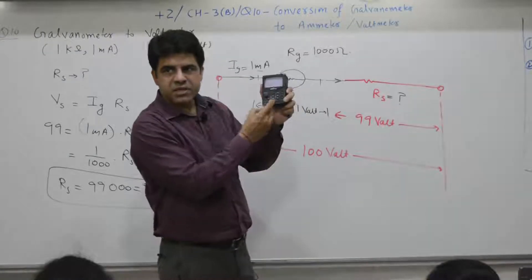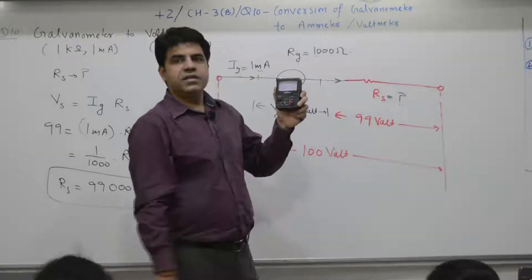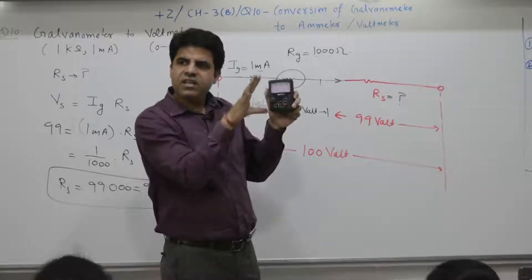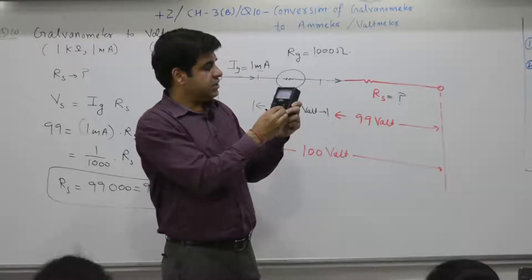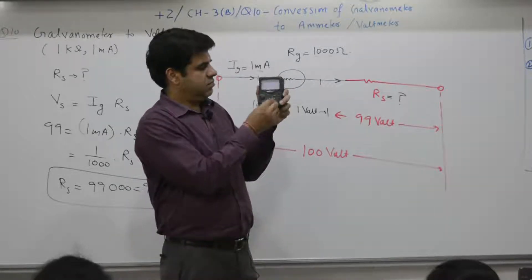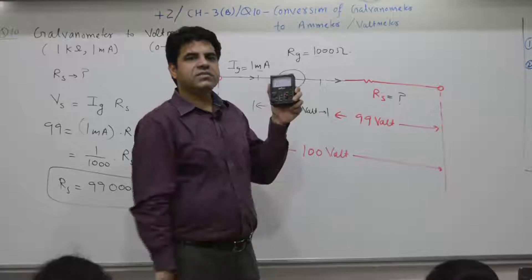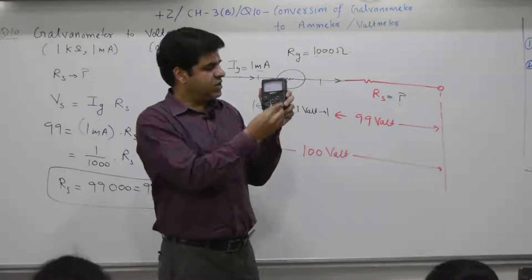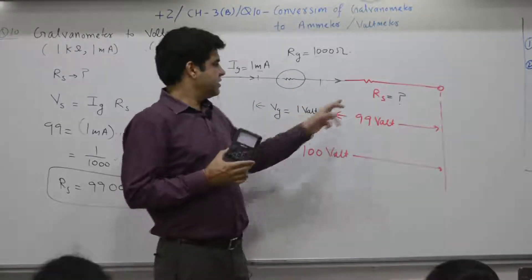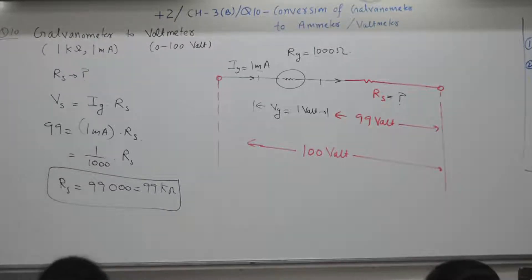Inside a multimeter there are a number of resistances. When you set the voltage range, it connects a resistance in series internally. For example, 10 ohm gives 10 volt, increasing resistance gives 50 volt, 200 volt, 1000 volt — the same device by placing resistances in series. You can increase the voltage measuring capacity of the same device.